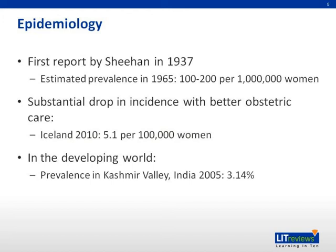However, these findings are not representative of the situation worldwide. An epidemiologic study conducted in Kashmir Valley, India in 2005 showed that the projected number of women with Sheehan's syndrome would be approximately 3% of the total female population greater than 20 years old. As such, the different levels of obstetric care could be the main reason underlying the different prevalences across countries.